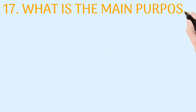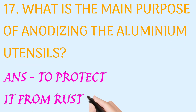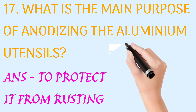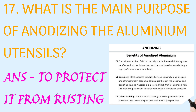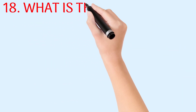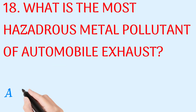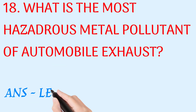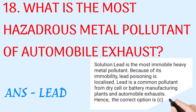What is the main purpose of anodizing aluminium utensils? Answer: to protect it from rusting. What is the most hazardous metal pollutant of automobile exhaust? Answer: lead.